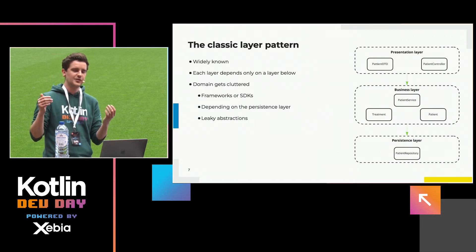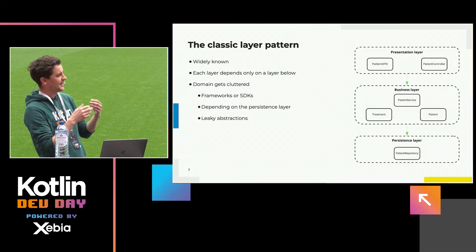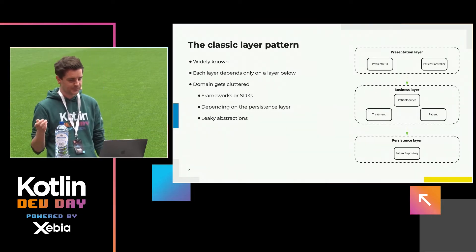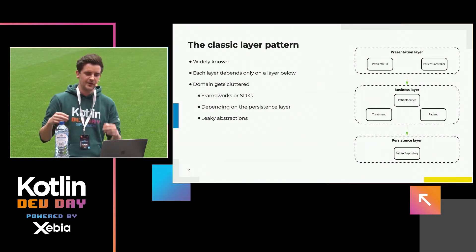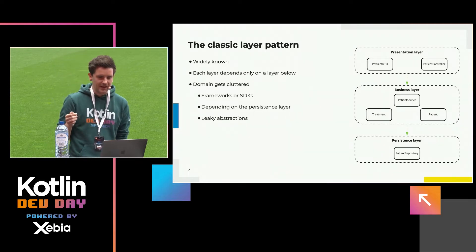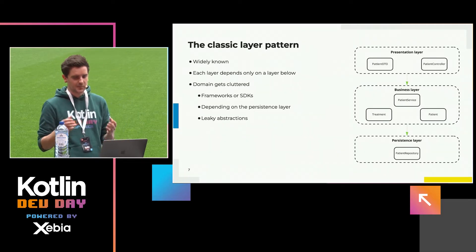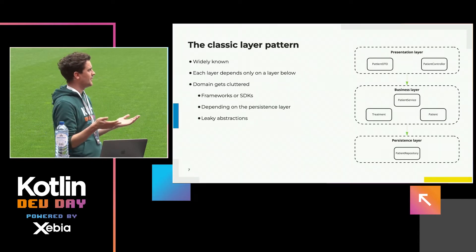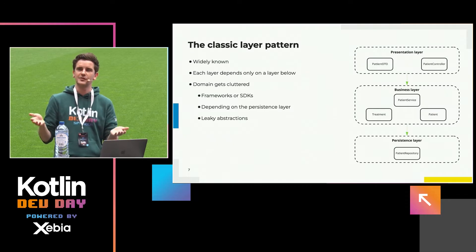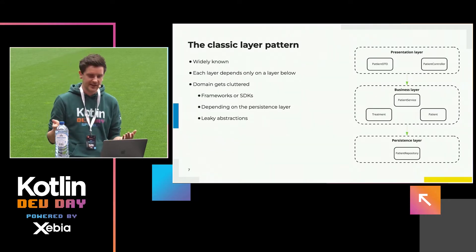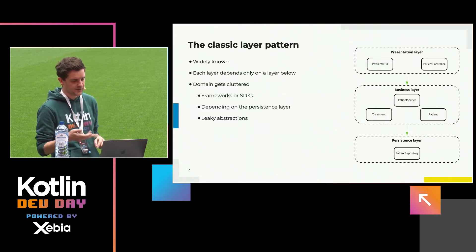In the classical layer pattern, we also see layers you define — for example, the presentation layer, business layer and persistence layer. The abstraction layers you build are also leaking. And this is a problem because your domain code gets cluttered. In my opinion, your domain code is the most important code of your application — it's where you define the behavior, the business rules, the requirements.